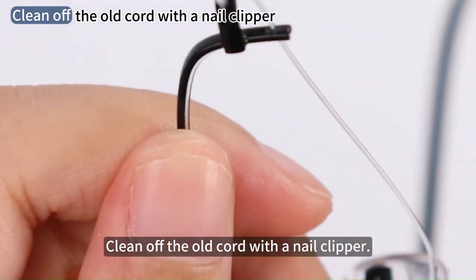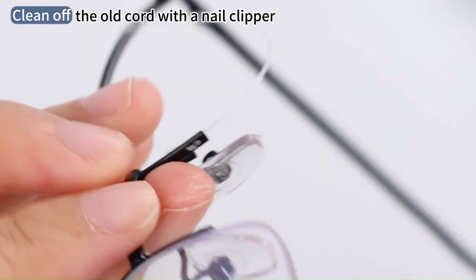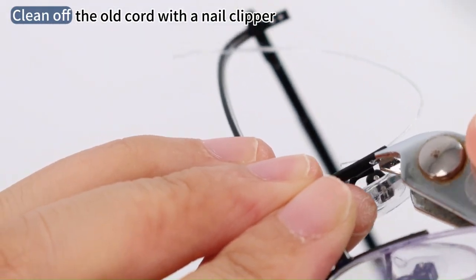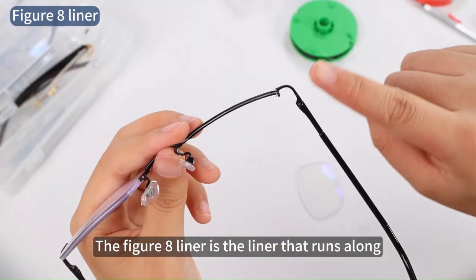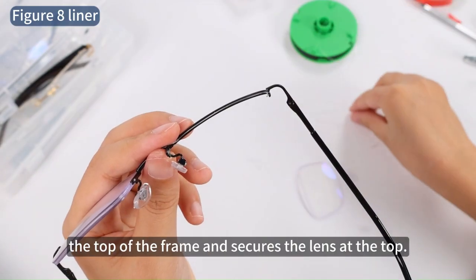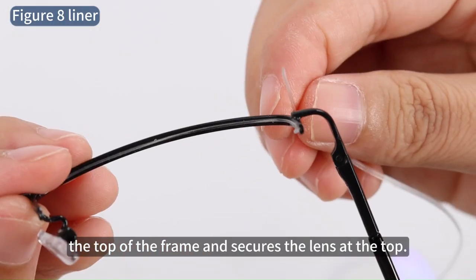Clean off the old cord with a nail clipper. The figure 8 liner is the liner that runs along the top of the frame and secures the lens at the top.